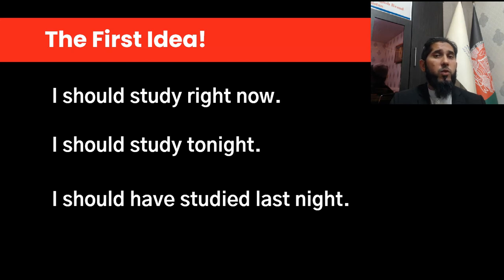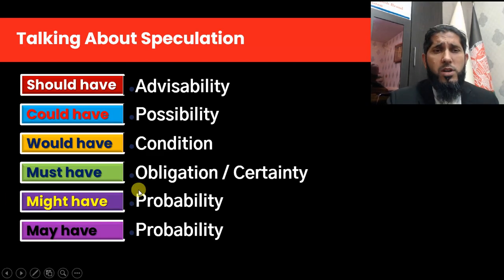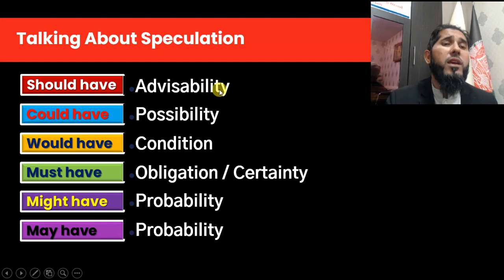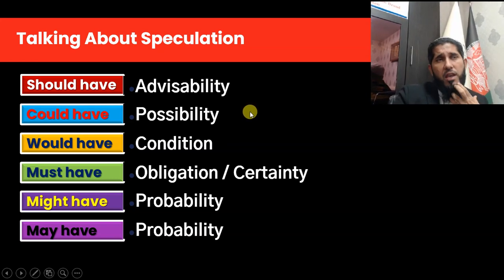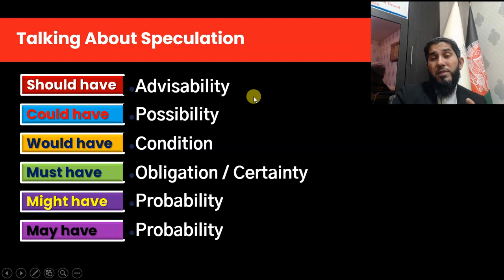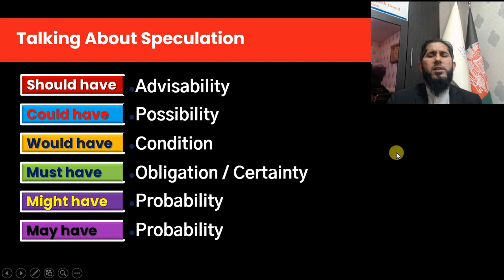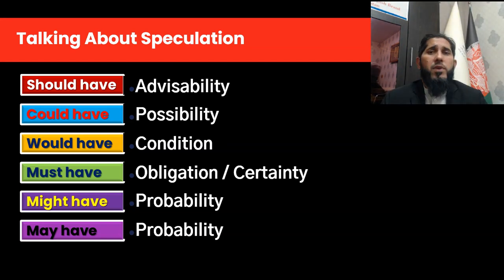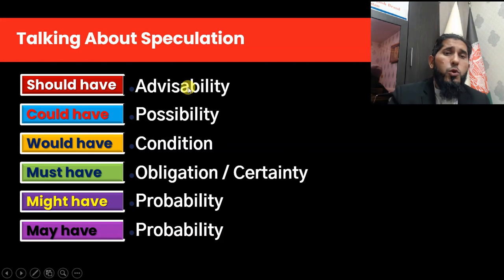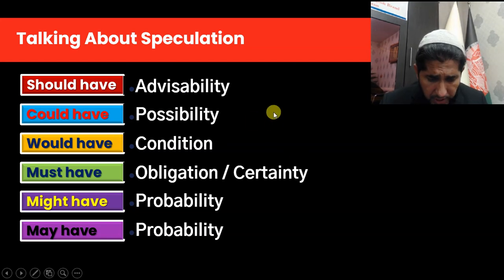In this case we need a perfective modal: 'I should have studied last night.' For example, today I had an exam and was not able to get a high score, so I should have studied last night. 'Should have' is used for advisability. For example, you say this morning I took an exam and was not able to get a good score, so somebody tells you: 'You should have studied hard last night.' Also, if one of your friends is mad at you because you did not invite him to your brother's wedding party, your friend tells you: 'You should have invited him.' So it's a kind of advisability.